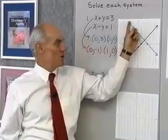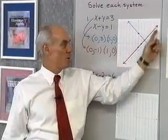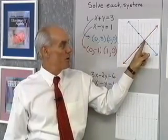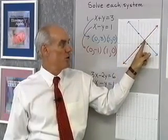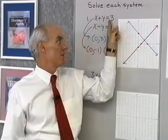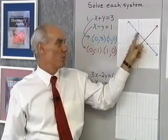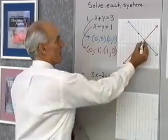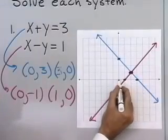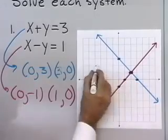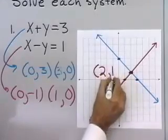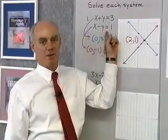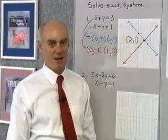Here are all the ordered pairs that satisfy my first equation, and all the ordered pairs that satisfy my second equation. This point right here is the only point whose coordinates will satisfy both equations, because it's the only point that's on both lines. That point, which is x equal 2, y equal 1, is the solution to this system of equations, found by graphing.